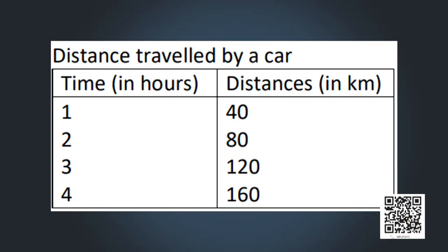To find the deposit amount for 280 rupees interest, locate 280 on the y-axis, follow the horizontal line through 280 until it meets the graph at point T, then take a vertical line down to the x-axis. The answer is 3500 rupees — if a person deposits 3500 rupees, they will receive 280 rupees as interest.